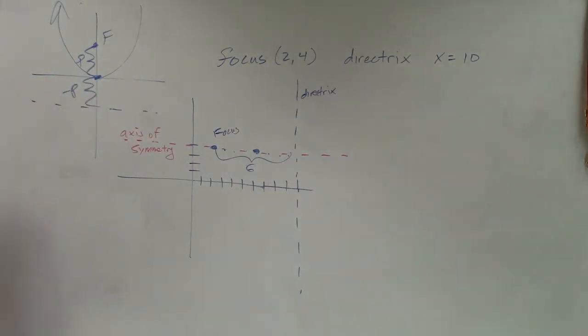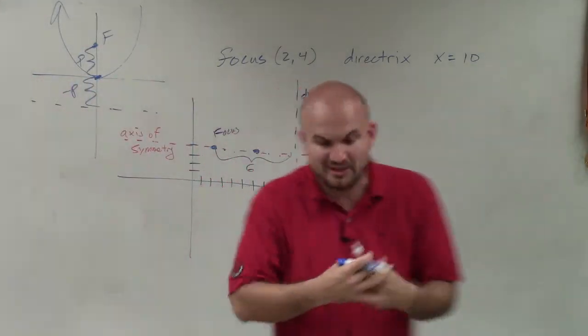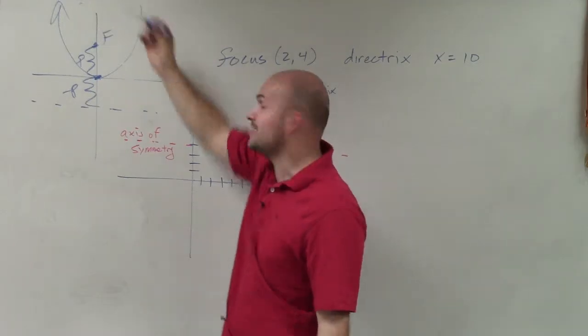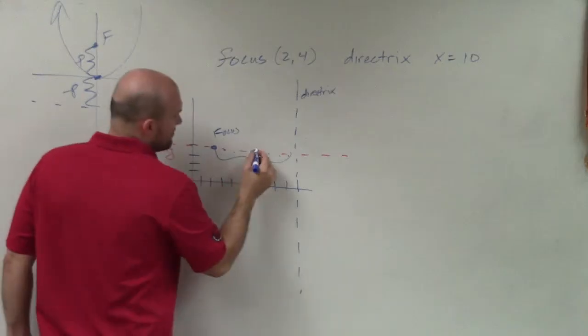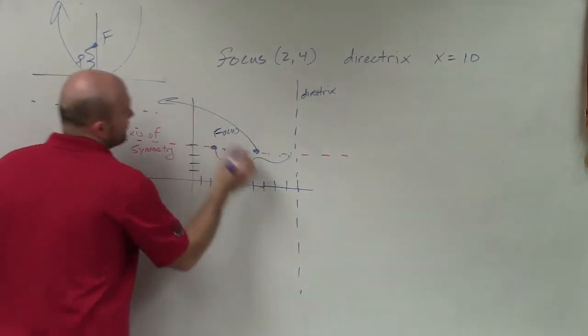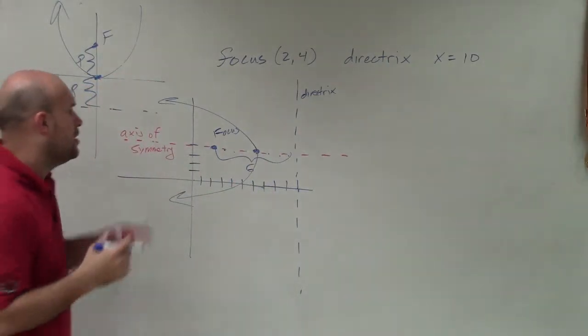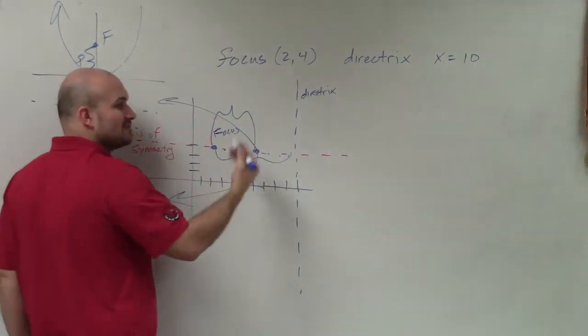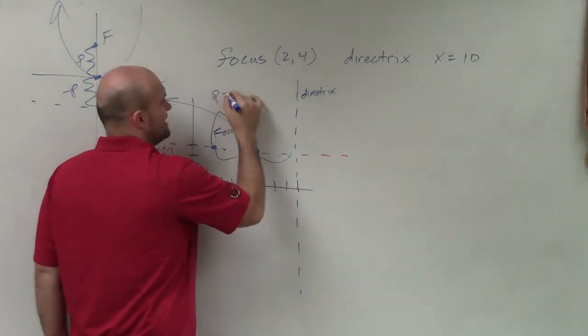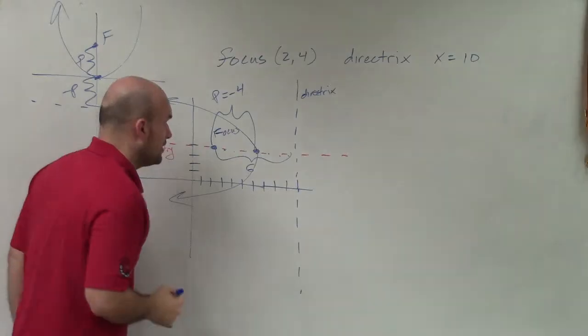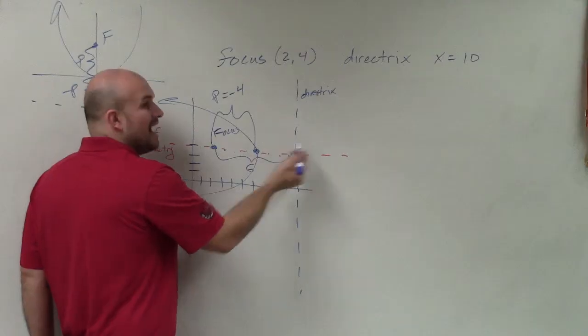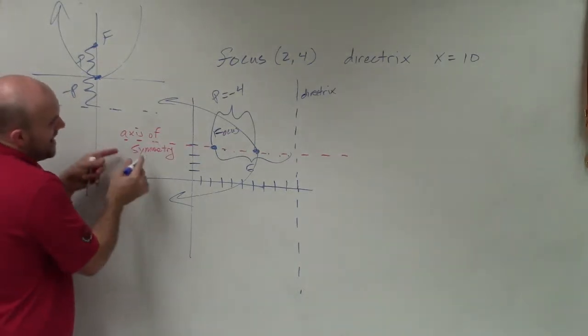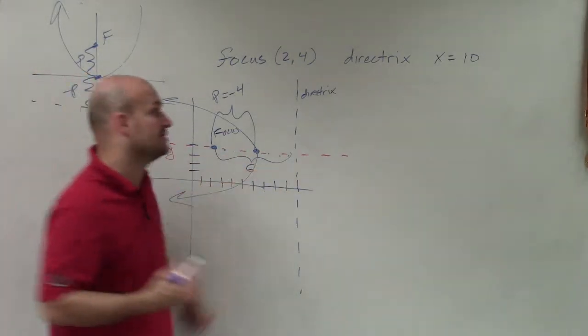OK. So now when, again, determining what the equation is going to be, we need to look at this and say, all right, remember, the focus is always inside of my parabola. So therefore, my parabola is going to look something like this. All right? Where the distance of p, you can see, is going to the left. So it's going to be negative. So p = -4. And so where the distance from here is going to be a positive 4, because we're going to the right from the vertex. But what's important is now I know my axis of symmetry is horizontal. I'm going to use this equation.